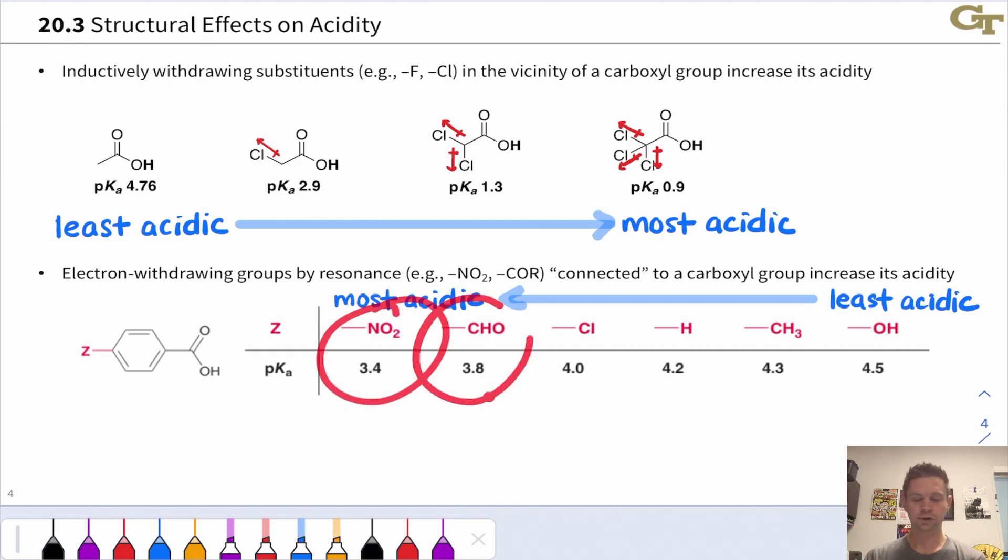from nitro to an aldehyde group, we get a little bit less acidic. The weakly withdrawing, just inductively withdrawing chlorine, is even a little bit less acidic.